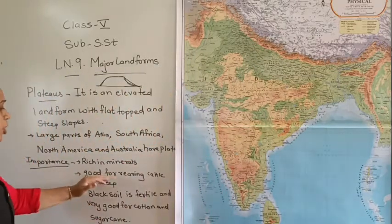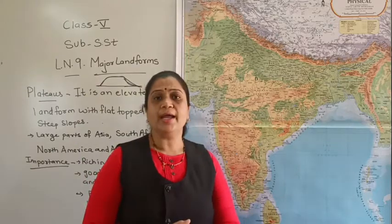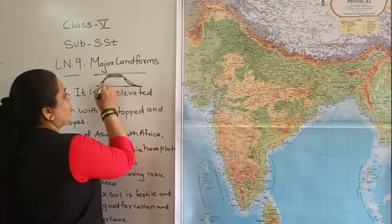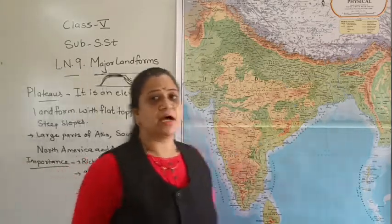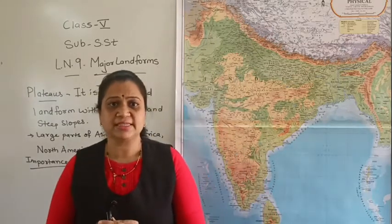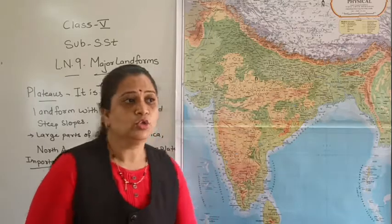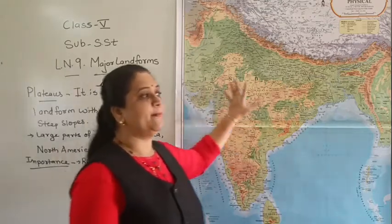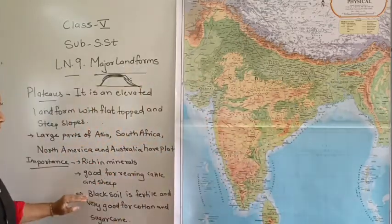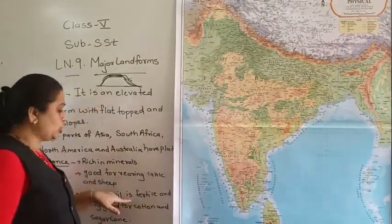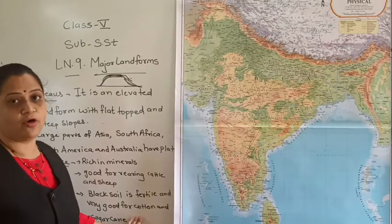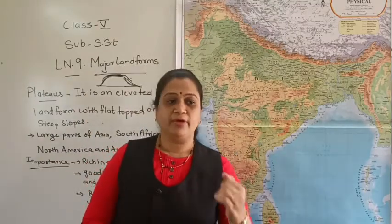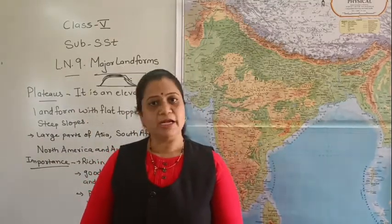Plateaus are also good for cattle rearing and sheep rearing. Why? Because of their grasslands. These plateau regions are mostly covered with grasses, so these grasslands are used for cattle and sheep rearing. Also, in the plateau region we mostly find black soil. Black soil is fertile and very good for cotton and sugarcane, so the plateau region has cultivation of cotton and sugarcane.